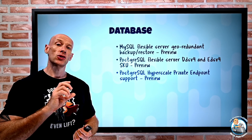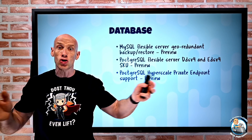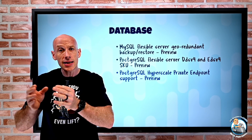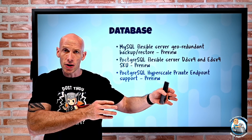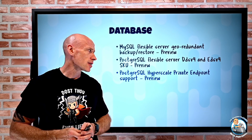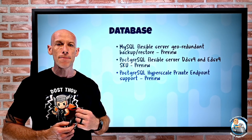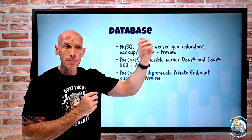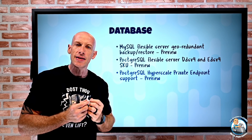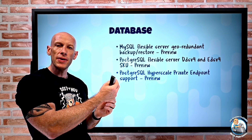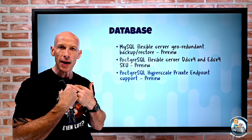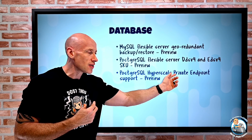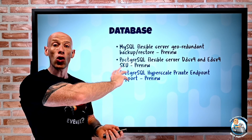PostgreSQL Hyperscale — which is based on the PostgreSQL Citus extension that makes it distributed, with a coordinator node allowing you to shard your database over multiple servers for fantastic scale and performance — now has private endpoint support. Instead of accessing the service through its public-facing IP, you access an instance of the service by an IP address it takes from your subnet. That's great for really locking things down in your security posture.